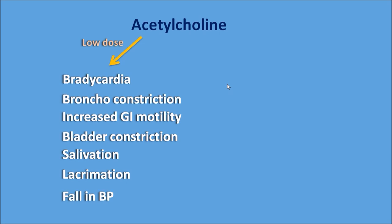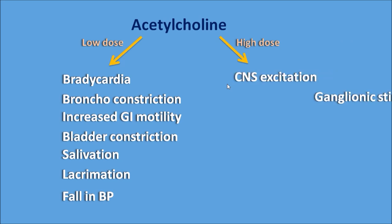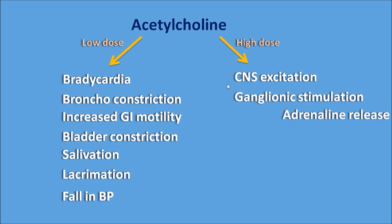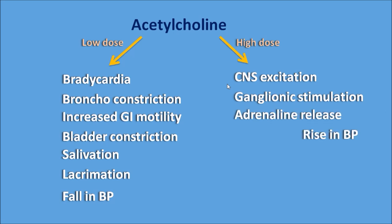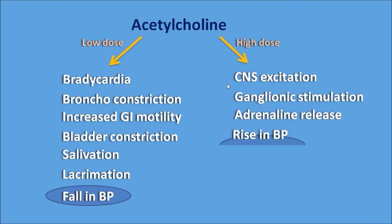Similarly, acetylcholine at a high dose produces another set of actions including CNS excitation, ganglionic stimulation, adrenaline release, and raising of blood pressure. So if you observe these two sets of actions, you can find quite opposite effects in terms of blood pressure: at low dose acetylcholine produces a fall, but at high dose it produces a rise in blood pressure.